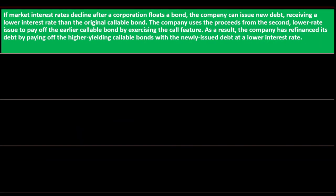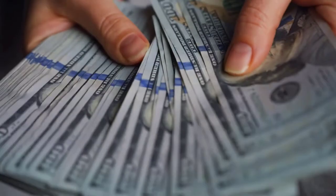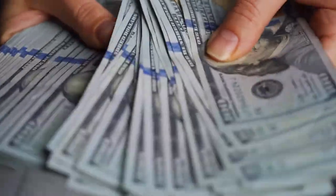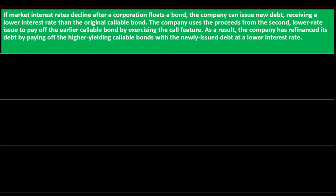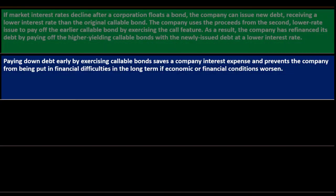Callable bonds and interest rates: if market interest rates decline after a corporation floats a bond, the company can issue new debt at a lower interest rate than the original callable bond. The company uses the proceeds from the second, lower-rate issue to pay off the earlier callable bonds by exercising the call feature — essentially refinancing, similar to refinancing a fixed mortgage as interest rates go down. This saves the company interest expense and prevents financial difficulties long term.